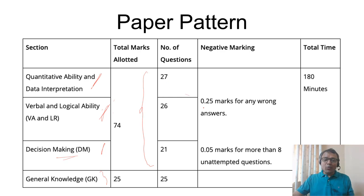There is 0.25 negative marking for wrong answers and also negative marks for not attempting more than 8 questions. That may vary every year. Overall, 27, 26, and 21 questions. 0.05 is very small to consider.